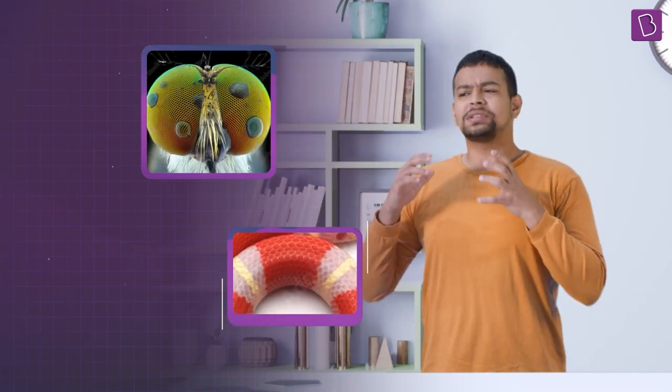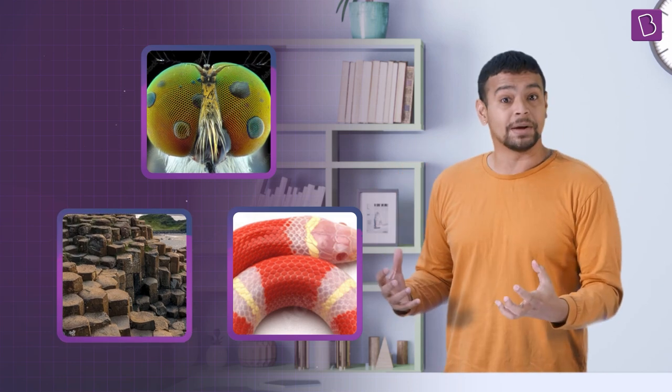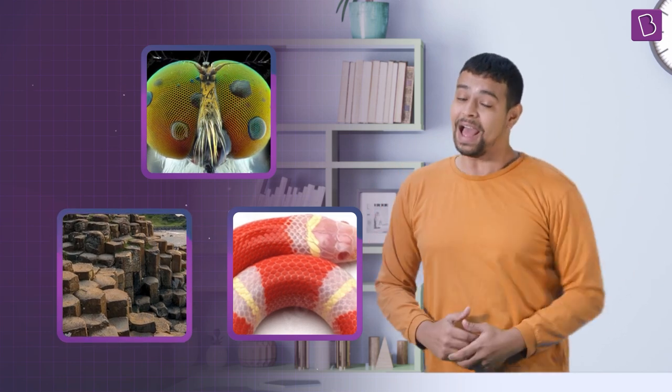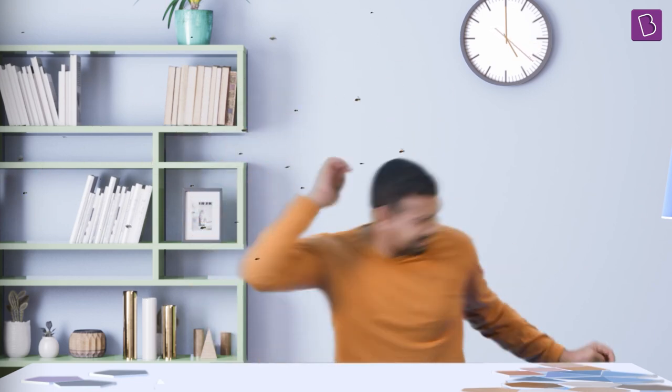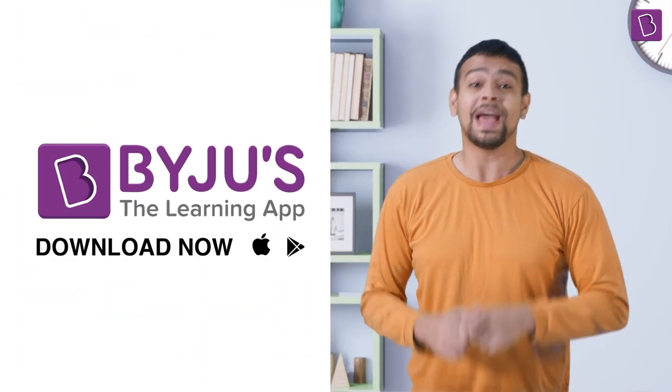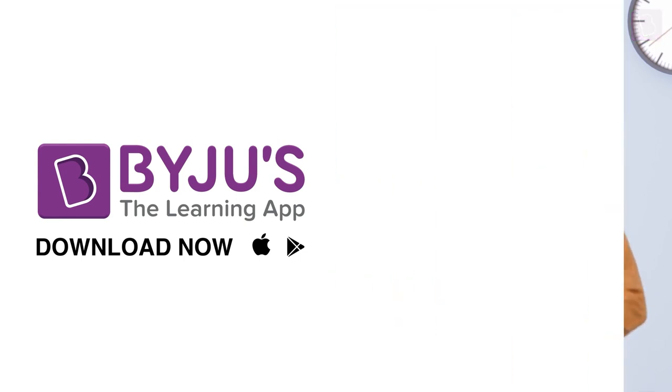In fact, this doesn't happen only in honeycombs. Have you seen this? There are stable hexagonal packing all around in nature. So now, you know why honeycombs are hexagonal. Can you find more examples of hexagons from nature? Let me know in the comments and I will see you until next time. And you know what to do for more conceptual clarity and engaging learning, download Byju's the learning app and subscribe and follow to the Byju's channel.